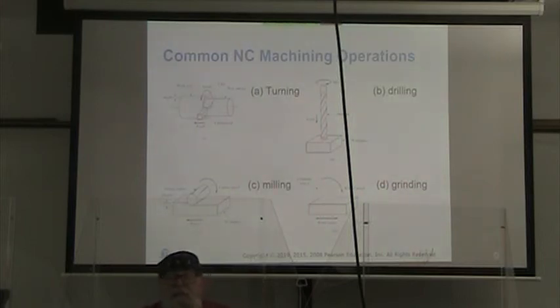Here we have common numerical control machining operations. We have turning, where a cutting tool is being fed down the rotating part, creating chips and a new surface. We have drilling, where a drill bit is turned to make holes in the workpiece. We have milling, where our cutter is being fed, and we're cutting off a certain depth of material of the workpiece. And then we have grinding, where we have a grinding wheel that is actually removing material from the workpiece.